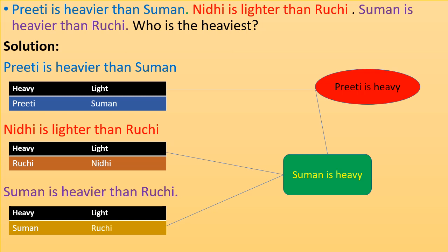Now from first table Priti is heavier than Suman. So we will conclude that Priti is the heaviest. So answer is Priti.